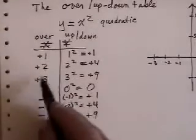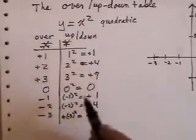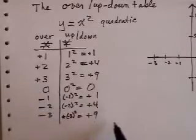Okay, so if I go to the right 1, 2, 3, I'm going up 1, 4, up 9. If I go to the left 1, 2, 3, I'm still going up 1, 4, up 9.